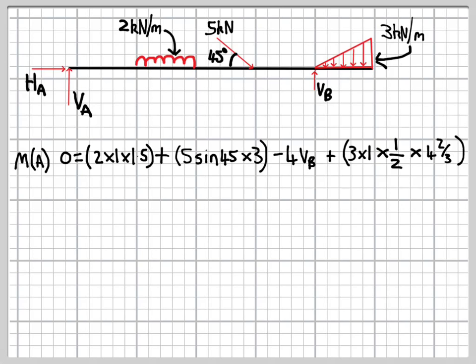And then the 1.5 is the lever arm of that load about A, because it's a uniformly distributed load, the position at which the equivalent point load acts is in the middle of the length of the UDL.